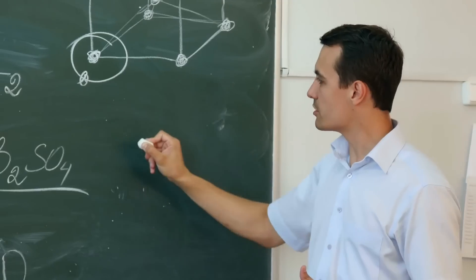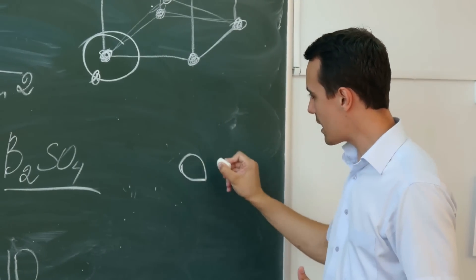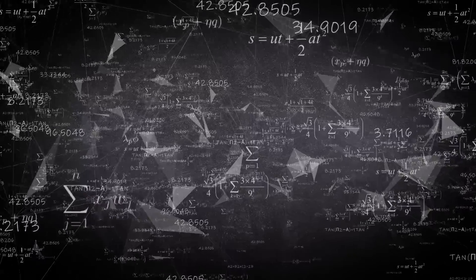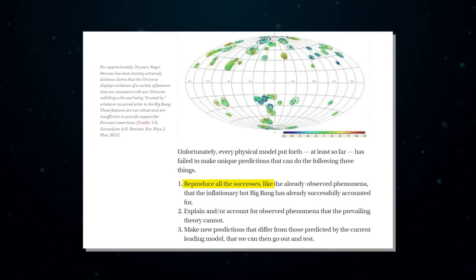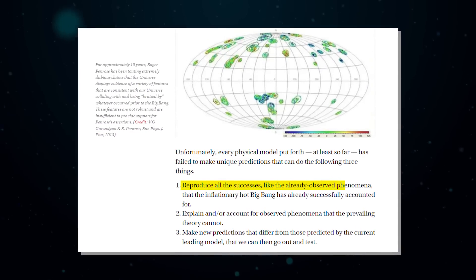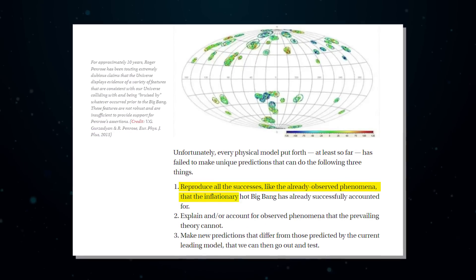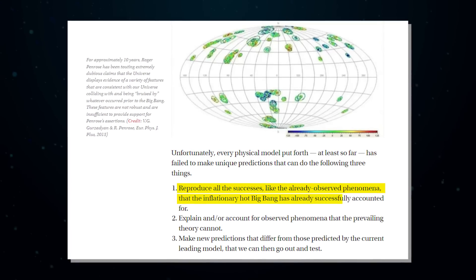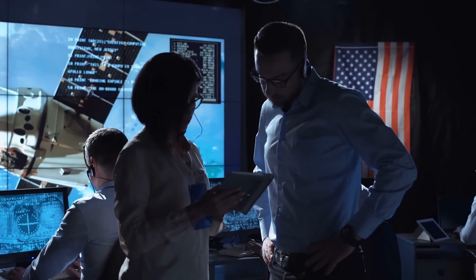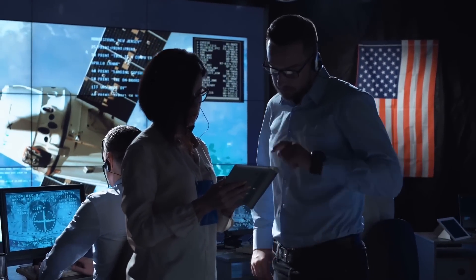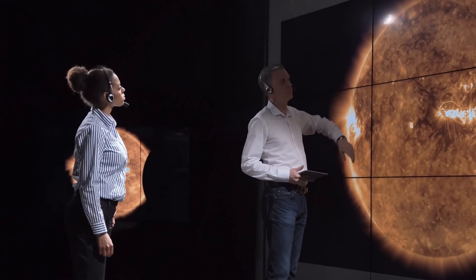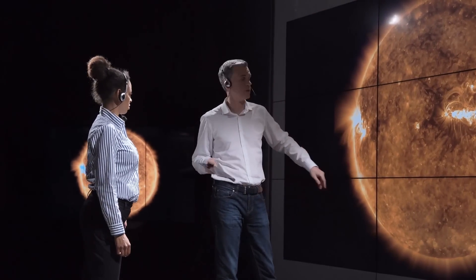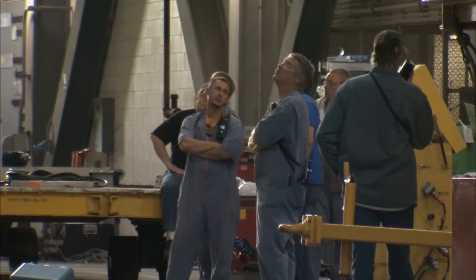Unfortunately, every physical model put forth, at least so far, has failed to make unique predictions that can do the following three things: reproduce all the successes like the already observed phenomenon that the inflationary hot Big Bang has already successfully accounted for; explain and or account for observed phenomena that the prevailing theory cannot; make new predictions that differ from those predicted by the current leading model that we can then go out and test.